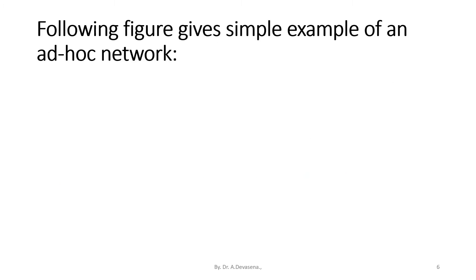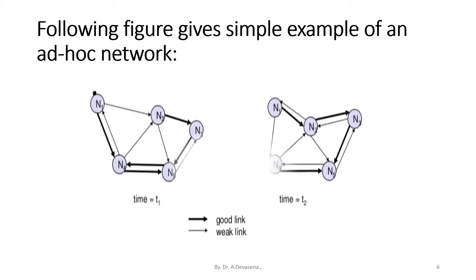The following figure gives a simple example of an ad hoc network. Here are two snapshots. At time t1, how the routing takes place is indicated, as well as at time t2, how routing takes place is indicated. The dark line between the nodes indicates a good link, while the thinner line indicates a weak link between the nodes.